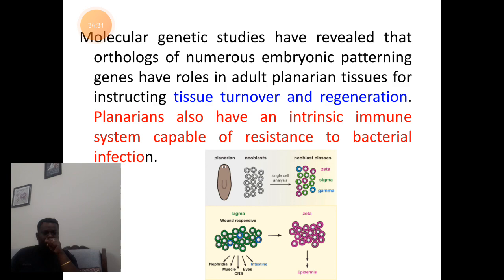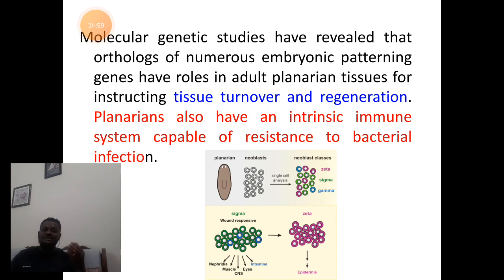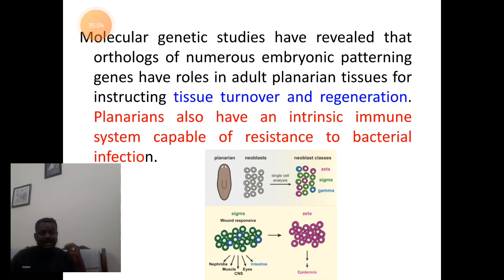The genes responsible for the formation of an embryo are found in stem cells. These stem cells remain in a state of division without undergoing maturation or differentiation until the planaria dies. These stem cells are hence called adult stem cells — because the stem cells are present in adults, having originated from their embryonic state. They instruct the process of regeneration during or after the damage and also help the damaged part resist bacterial infections.